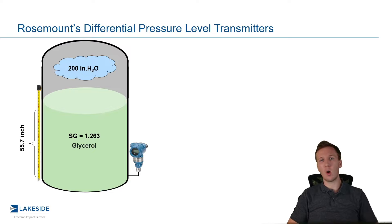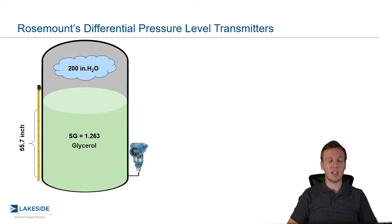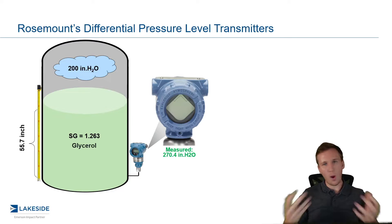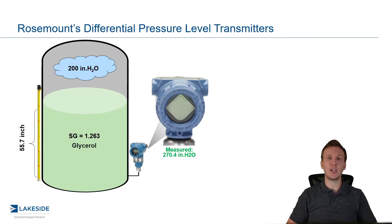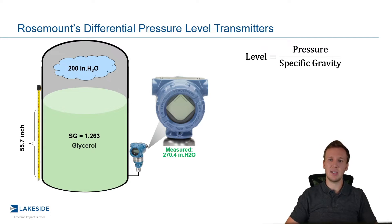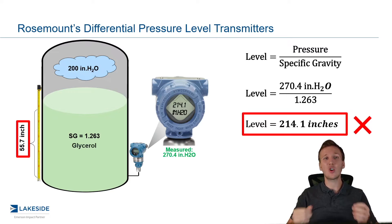Now let's take it a step further and make things a little bit more complex. Let's say we have a vessel that has a closed roof and is pressurized in the vapor space. In this case, we're saying we have 200 inches of water of pressure in that vapor space. Now if we continue to use a gauge pressure transmitter, as pictured at the bottom here, we're going to read incorrectly — we're going to be measuring 270.4 inches of water. This gauge pressure transmitter is sensing the pressure exerted on it from both the liquid and the gas phase, so it's cumulative: the 200 inches of water in that vapor space plus the 70.4 inches of water, which is really glycerol pushing down. So if we continue the same scaling as previously, we take 270.4 inches of water, divide by the specific gravity, and we are left with an incorrect level reading — almost four times the actual product level.